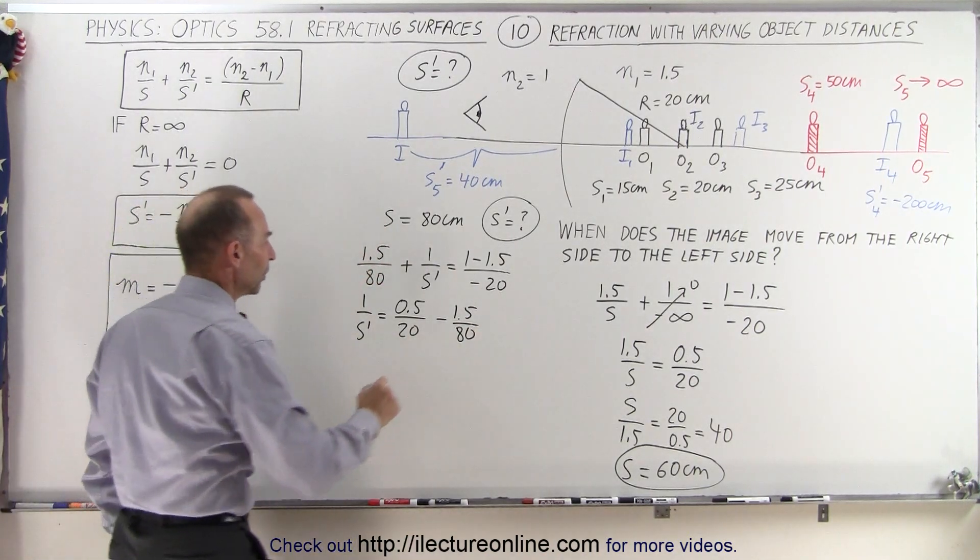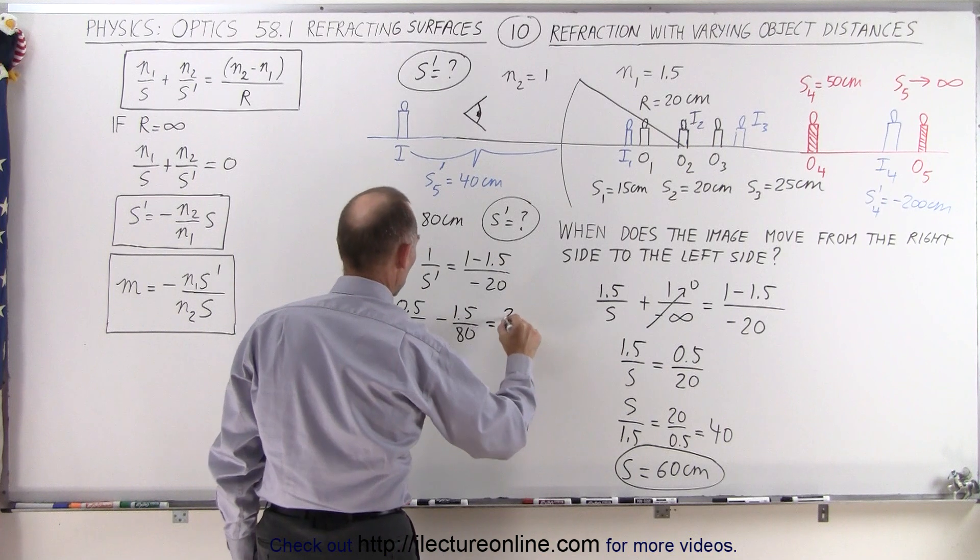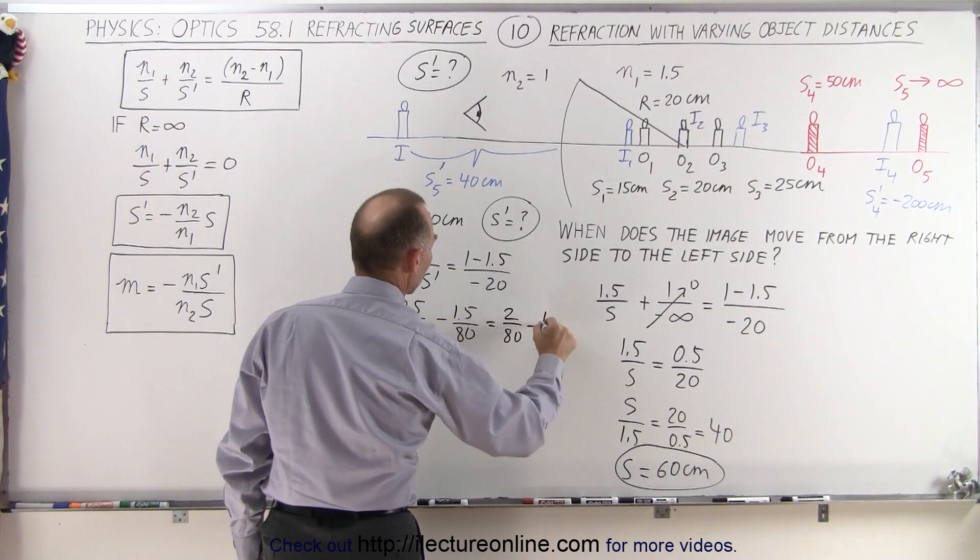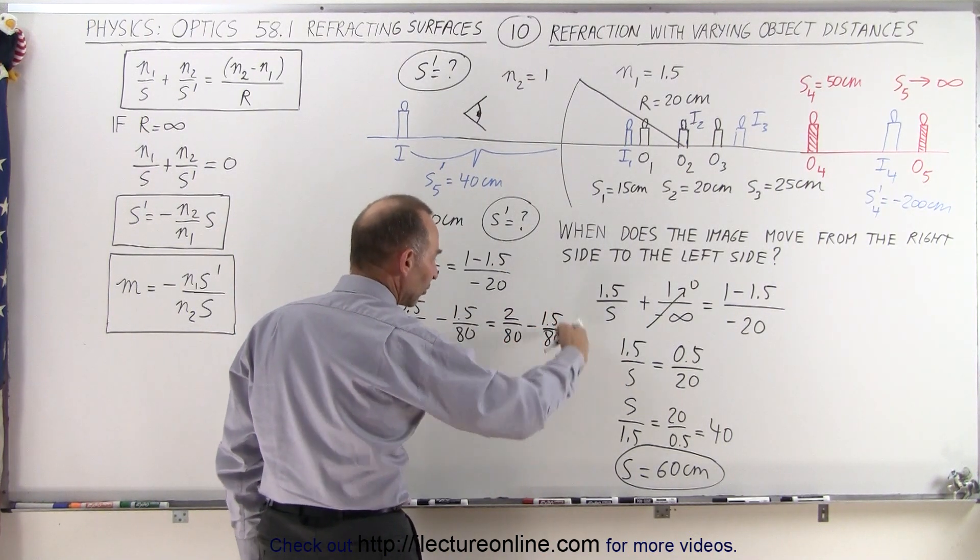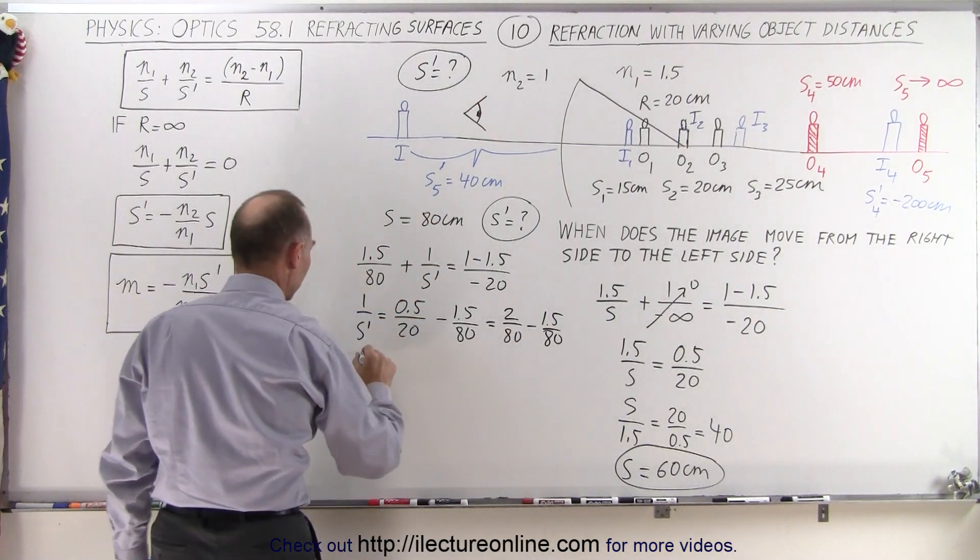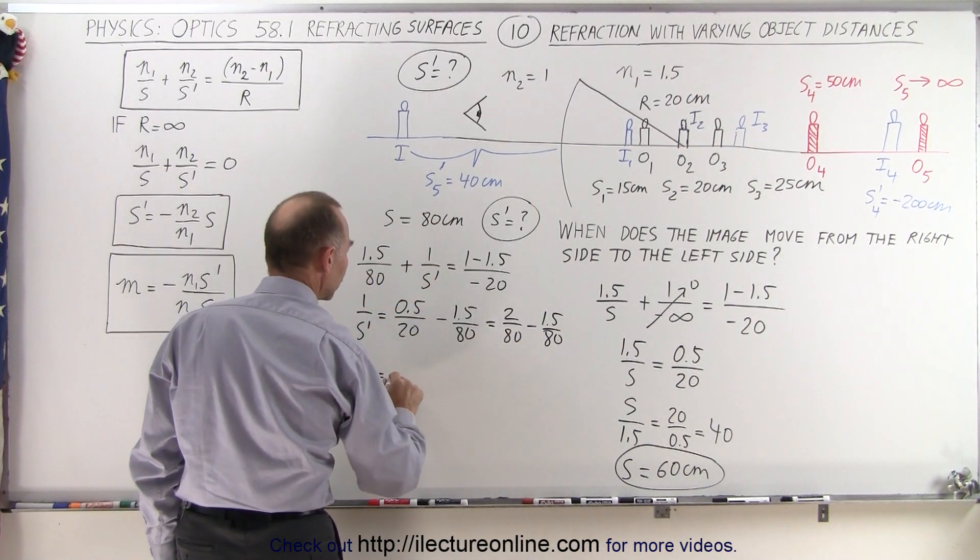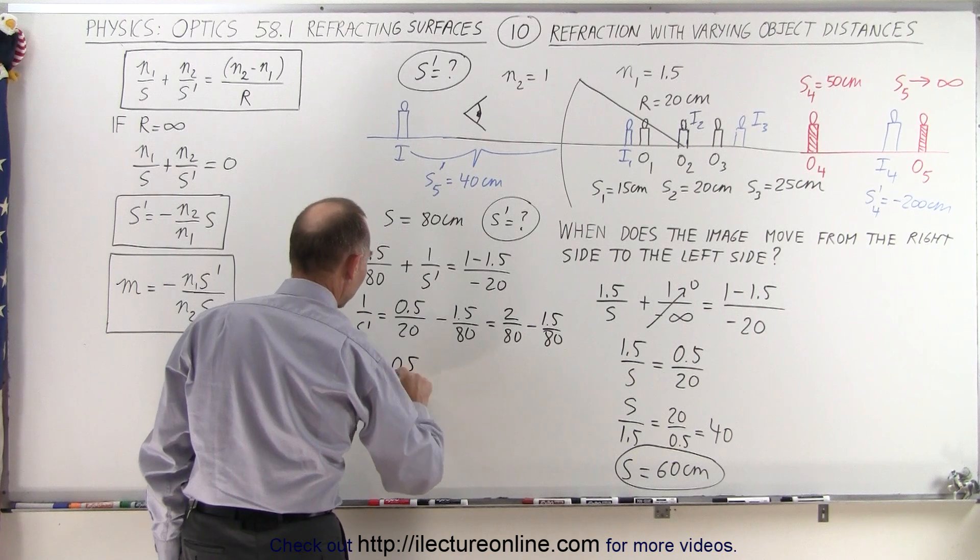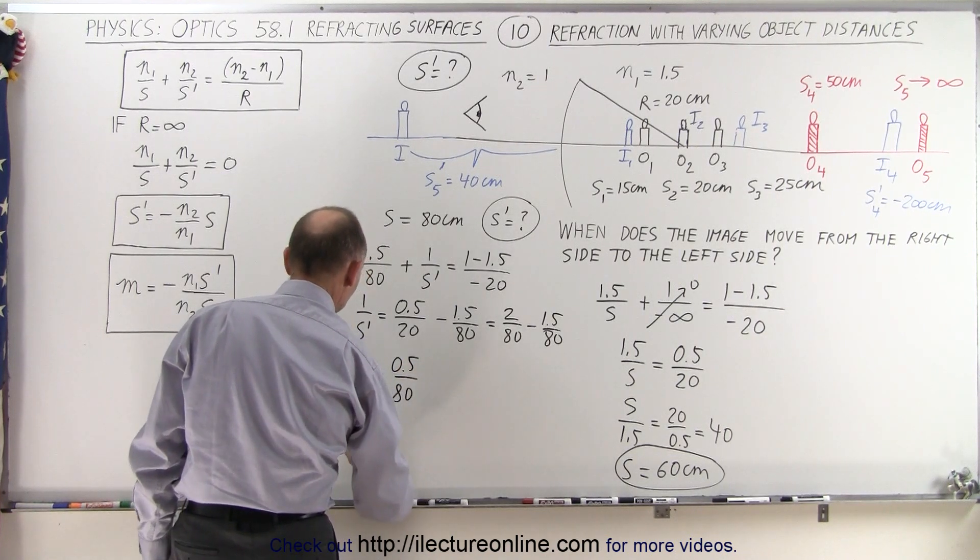So this becomes 2 over 80 minus 1.5 over 80, and right away you can see that this is going to give us a positive quantity. So 1 over S' is equal to 0.5 over 80, which means that S' is going to be equal to 160 centimeters.